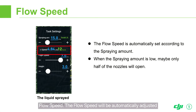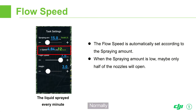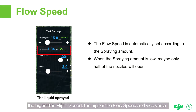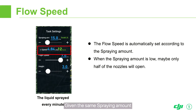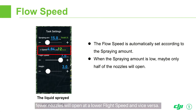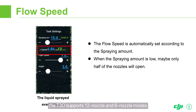The flow speed will be automatically adjusted based on the set flight speed after the spraying amount is set. Normally, the higher the flight speed, the higher the flow speed, and vice versa. The number of open nozzles is determined based on the flow speed. Given the same spraying amount, fewer nozzles will open at a lower flight speed and vice versa. The T20 supports 4-nozzle and 8-nozzle modes. The T30 supports 12-nozzle and 6-nozzle modes. And the T10 supports 4-nozzle and 2-nozzle modes.